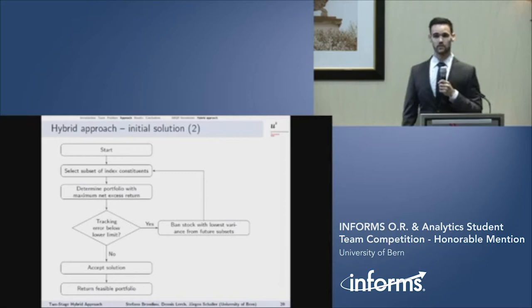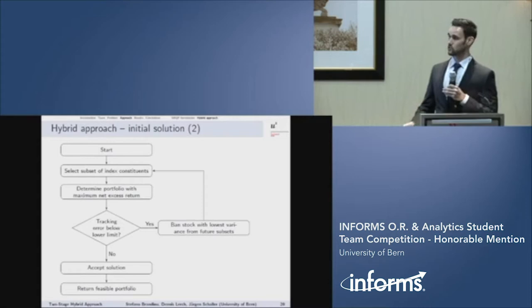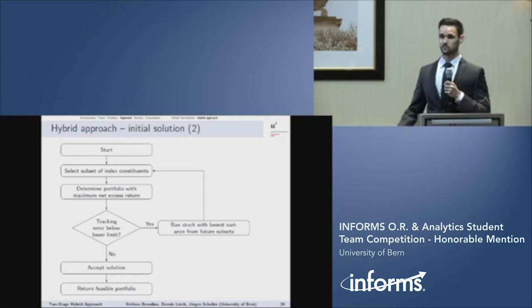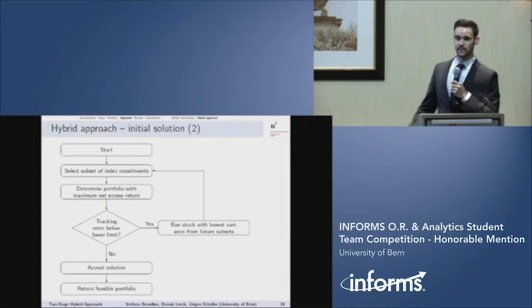In the first stage, we ignore the tracking error and only focus on maximizing the net excess return. Doing that, we want to achieve a portfolio with a high tracking error so the lower bound is satisfied. This flow chart shows how stage one works. The algorithm starts by selecting a subset. However, since there are a lot of constraints, we cannot just randomly put stocks into that subset. So what we do is we first include the stocks from the portfolio prior rebalancing. Because this portfolio has been valid the last period, so it should be also valid in this period. Finally, the algorithm also adds some random stocks to it. And then, a solver solves the MIQP and the resulting portfolio is checked for its tracking error.